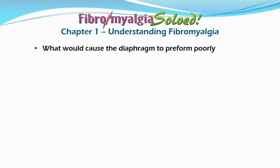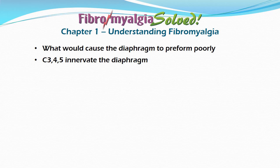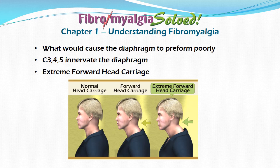Next, I asked myself: what would cause the diaphragm to perform poorly? I readily remembered the mnemonic from school: C3-4-5 keeps the diaphragm alive. Thus, pressure on the spinal nerves of C3, C4, and C5 could theoretically cause the diaphragm to work poorly. My patient did have extreme forward head carriage — his forward neck posture was quite pronounced, not just a little forward. This became my latest theory: that pressure on C3-4-5 would lead to a poorly working diaphragm, leading to sleep apnea.